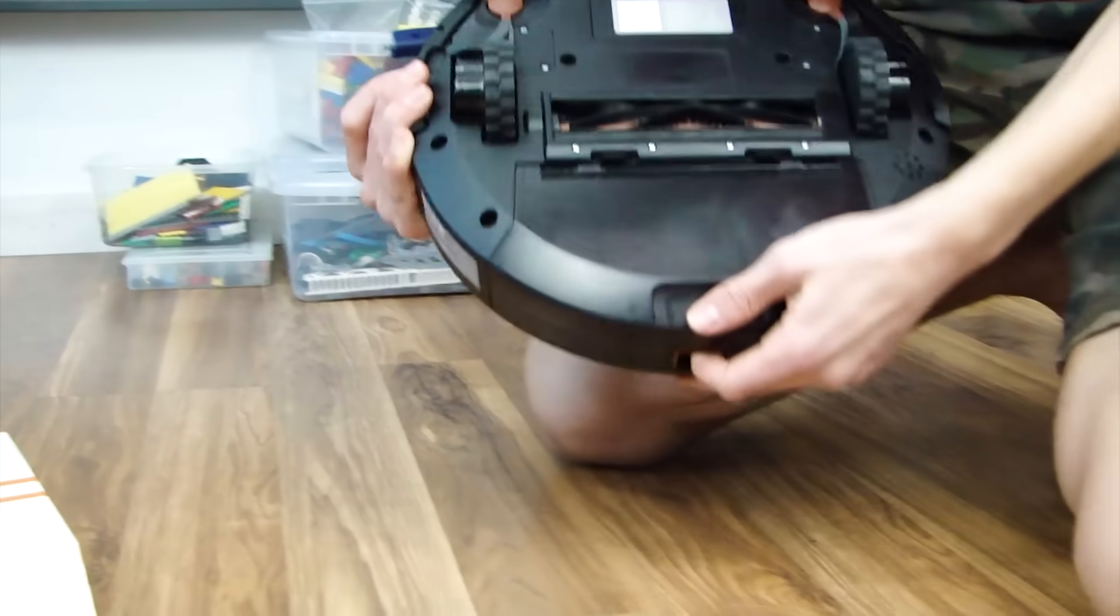So how this thing actually works is that these two brushes spin in on both sides and then this middle one will just pick it up and then it puts all that in this dust bin right here. So I'm going to be doing five tests to see just how good my Lego vacuum is compared to this one. But some of the tests regular robot vacuums aren't really meant to do.